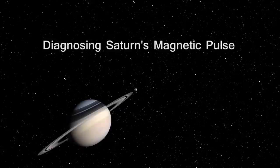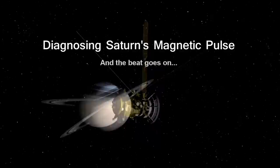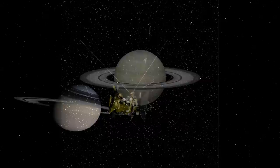Saturn has some strange periodic signatures in its magnetosphere that scientists have been struggling for years to explain. Using data from NASA's Cassini mission, scientists have come up with one possible explanation.